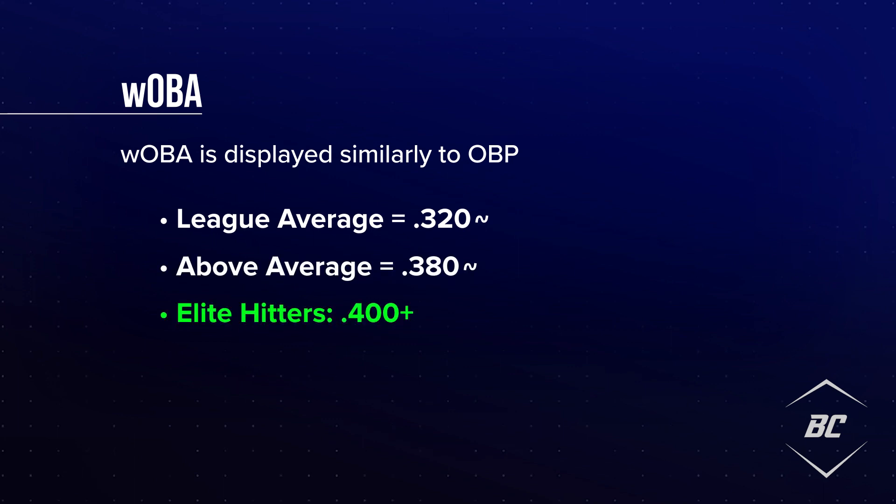Reviewing WOBA is similar to on base percentage, where the league average is roughly .320, with .380 being above average and anything above .400 being elite. One of the reasons we may use WOBA over other advanced metrics is that it properly provides credit to players who are skilled at drawing walks or getting on base, and more accurately accounts for hit values. By using weighted stats we are able to get the best possible look at a player within a particular level based upon their run scoring environment compared to others.